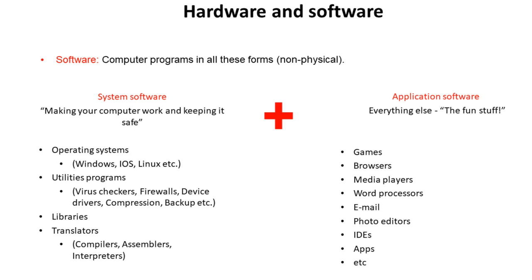Within system software there are a few subcategories, which are going to be looked at in subsequent videos. The main piece of system software is often considered the operating system — for example Windows, Mac, iOS, Linux — but there are also utility programs, things like virus checkers, firewalls, and compression software.